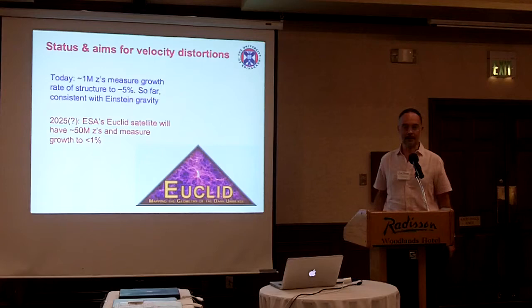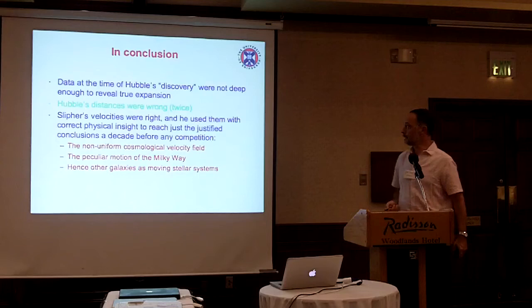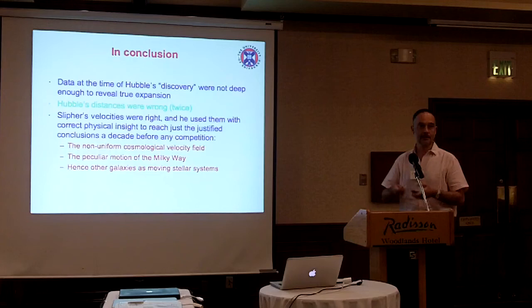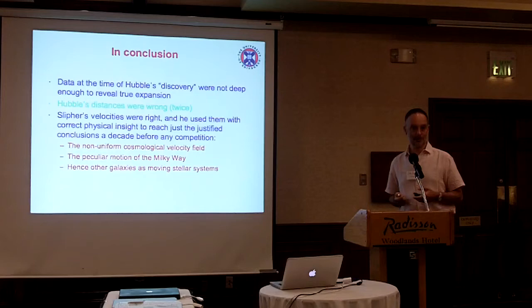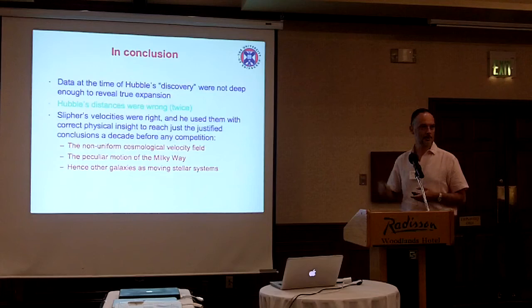So just to sum up once again: I've given you my perspective based on going back to the data and contrasting the modern data, as to whether it would have been legitimate to claim detection of expansion of the universe in 1929. I think even with perfect data, the answer is no. Hubble's data were wrong in two distinct ways, and this second way I've never seen pointed out before.